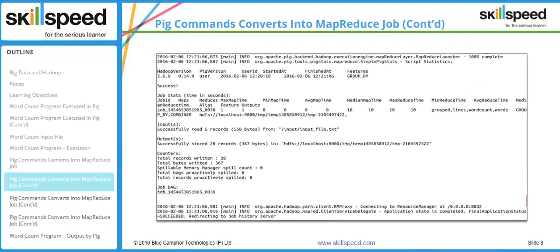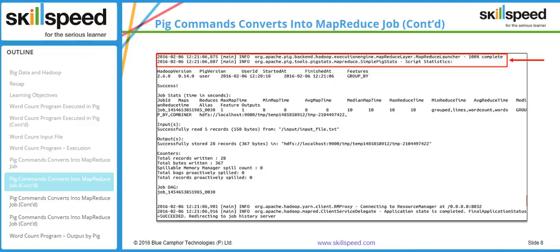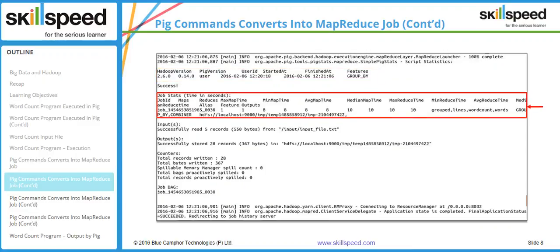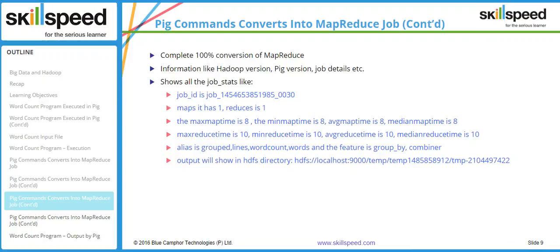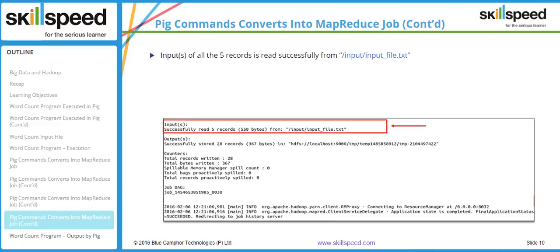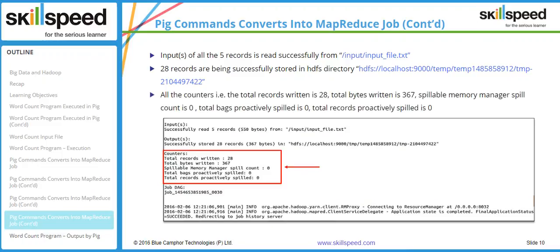Here you can see many arrows that I have created to explain the output. Arrow 9 shows the 100% completion of the MapReduce job, and arrow 10 shows information on Hadoop version, Pig version, and job details. Arrow 11 shows all the job status such as the ID and how many Map and Reduce jobs ran. Arrow 12 shows that 5 records were read successfully from the input file, and arrow 13 shows that 28 records are being successfully stored back into the HDFS directory. The last arrow shows the counters and records returned.